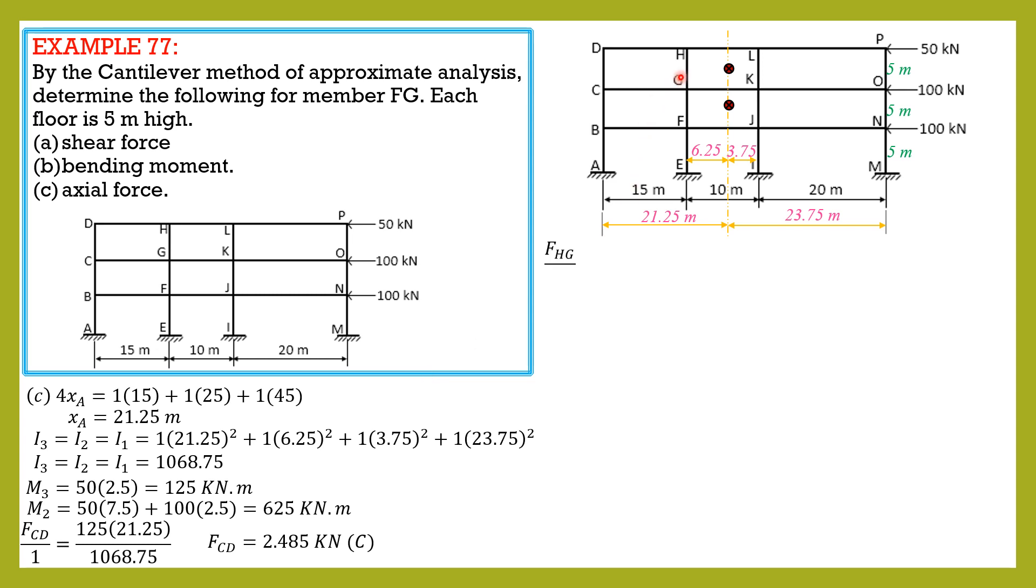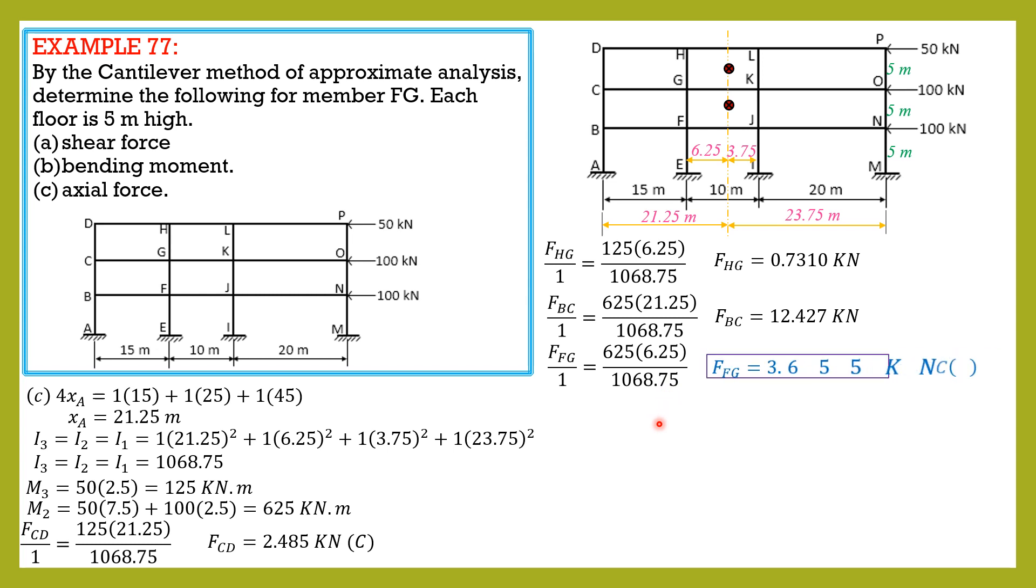We also need FHD equals moment in level 2. So FHD equals 0.7310 kilonewtons. Then FBC equals 625 times 6.25 over moment of inertia at 1068.75. So FFG is 3.655 kilonewtons.